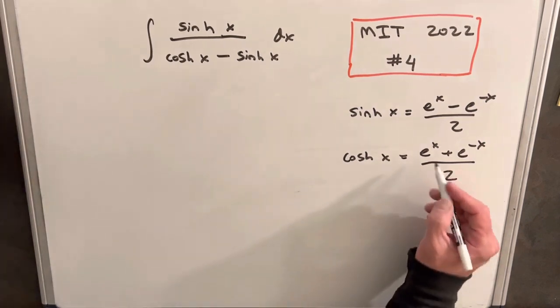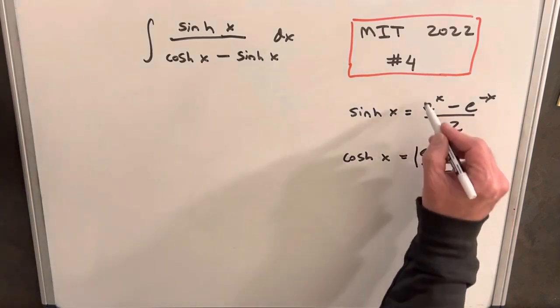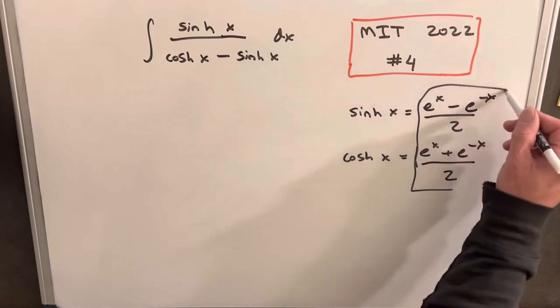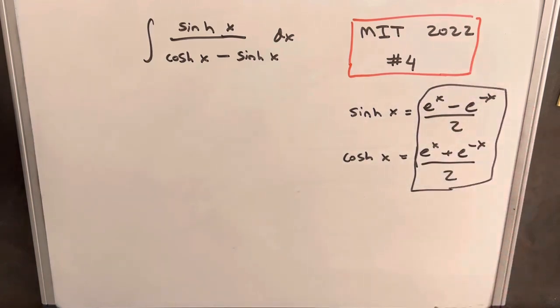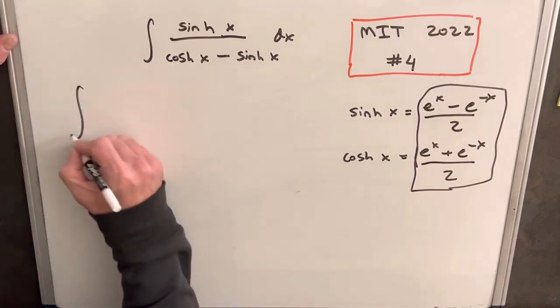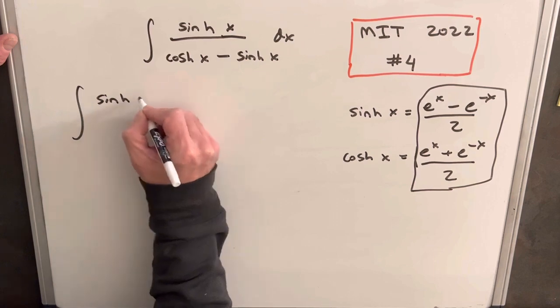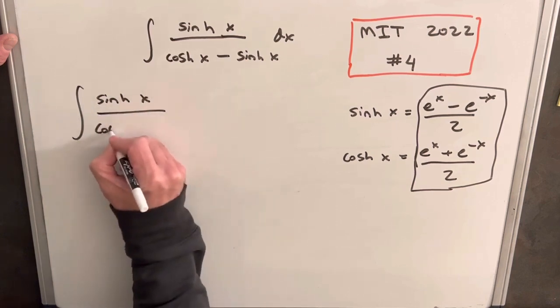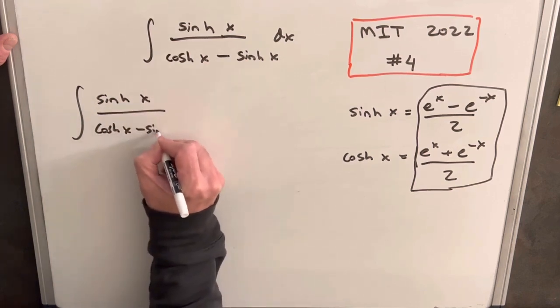So what you could do is just take these values here and plug them back into the problem, and it simplifies pretty nice. So we could do it this way, but I think what I want to do is let's try some manipulation of the trig functions to see if we can do something a little nicer. What I'm going to do is let's take our integral sinh x over cosh x minus sinh x.